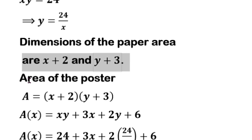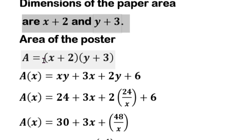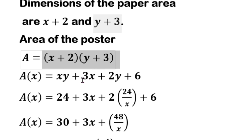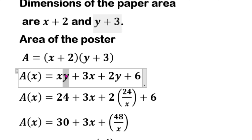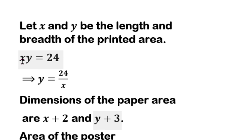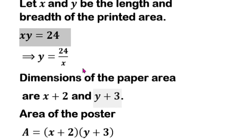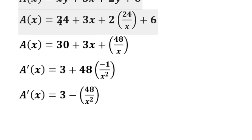Y is equal to 24 divided by x. The area of the paper is length times breadth, which is (x + 2) into (y + 3). Expanding: x·y + 3x + 2y + 6. Since x·y = 24, substituting gives the area as 30 + 3x + 2y + 6, simplifying the expression.